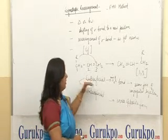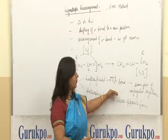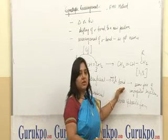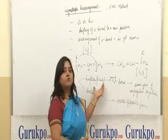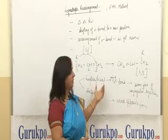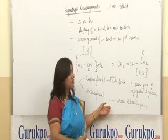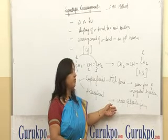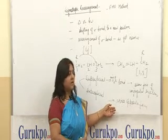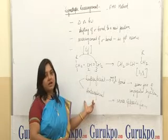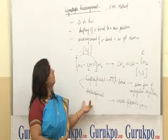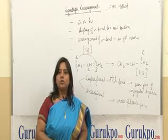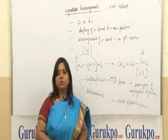In the suprafacial case, migration of the sigma bond occurs on the same face of the conjugated system — that is why it is called suprafacial rearrangement. In the case of antarafacial, migration of the sigma bond occurs towards the opposite side of the conjugated system — that is why it is called antarafacial rearrangement. For more details, you can log on to www.gurukpo.com.